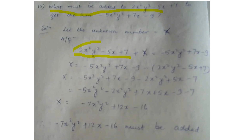I am taking this whole expression to the right hand side, so it will be a minus. Capital X is equal to minus 5x square y square plus 7x minus 9, minus in the bracket 2x square y square minus 5x plus 7. Solving this will give you the value of X as minus 7x square y square plus 12x minus 16. So finally you can say that minus 7x square y square plus 12x minus 16 must be added.